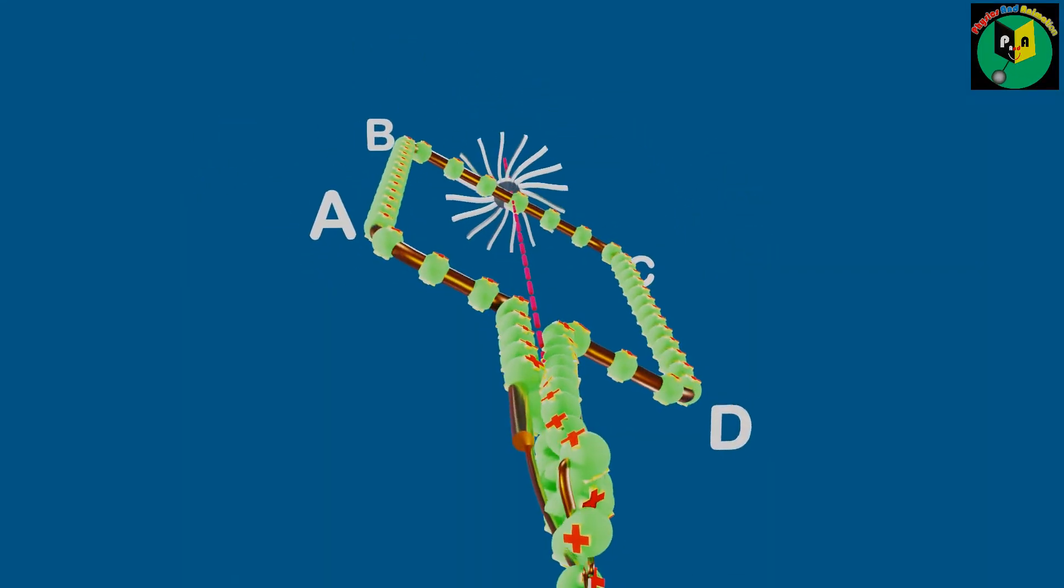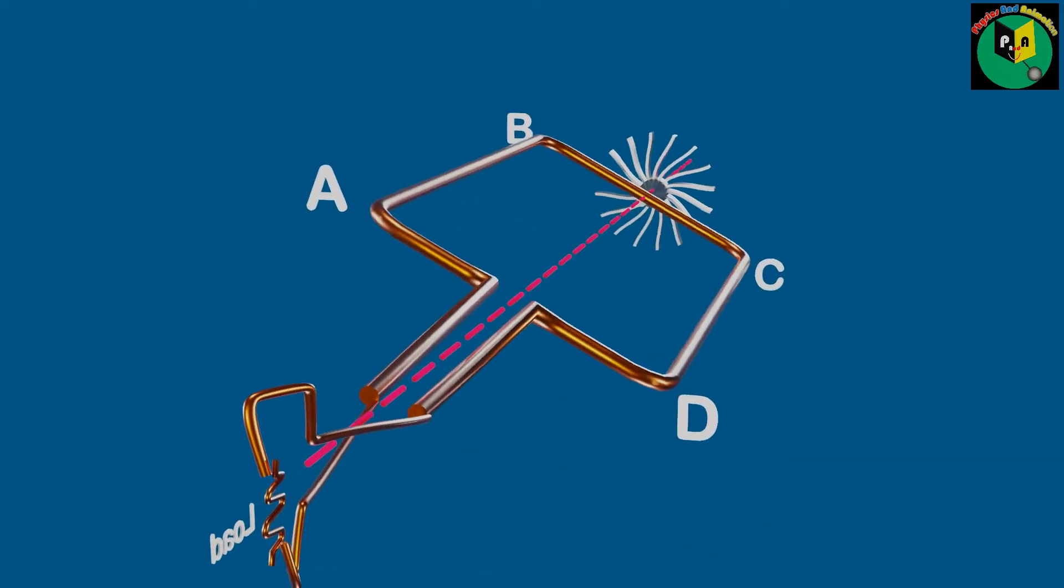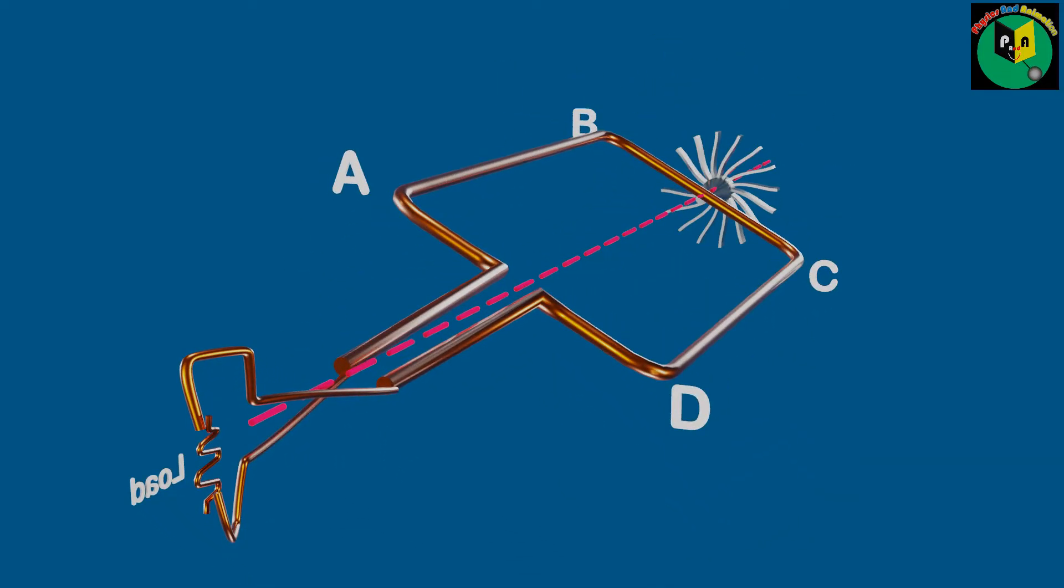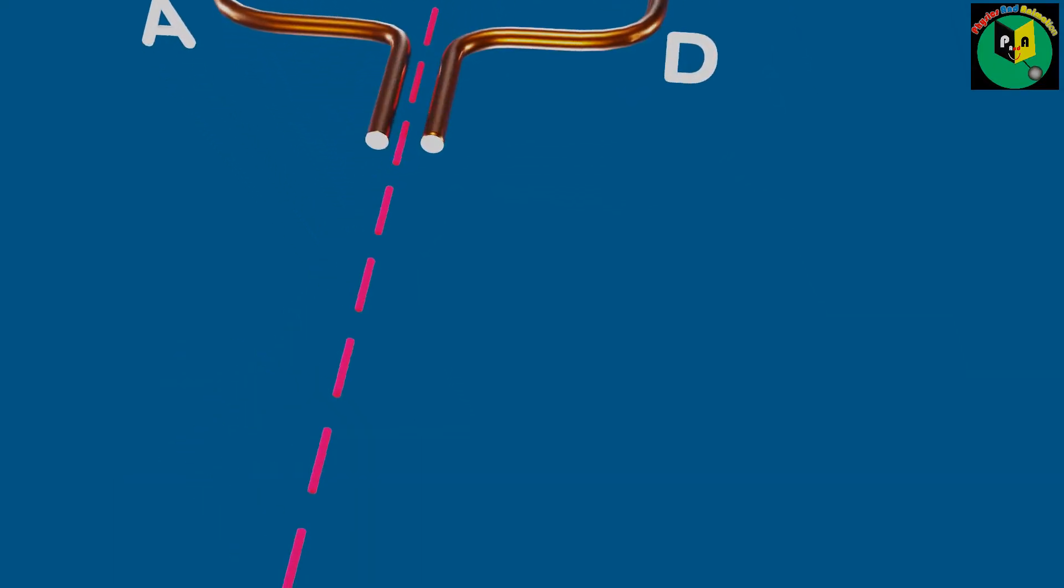But with this arrangement, when we rotate the coil, twisting occurs and resists the rotation of the coil. To resolve this problem, we use a slip ring.